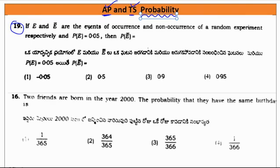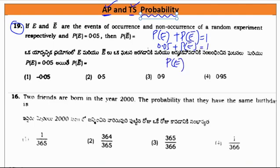First question: If E and E₀ are the events of occurrence and non-occurrence of a random experiment respectively, P(E) is 0.05 and P(not E) is? The formula is P(E) + P(not E) = 1. So 0.05 + P(not E) = 1, therefore P(not E) = 1 - 0.05 = 0.95. The answer is 0.95.